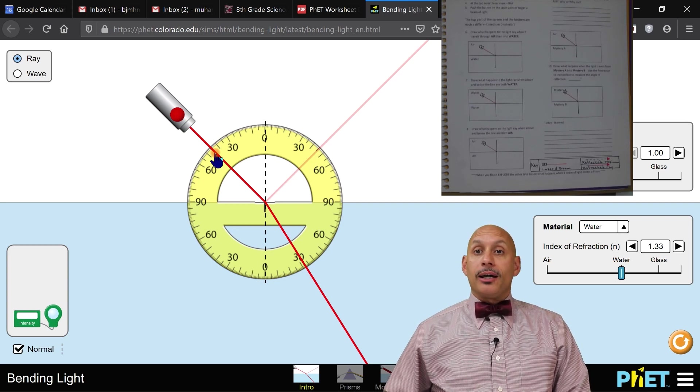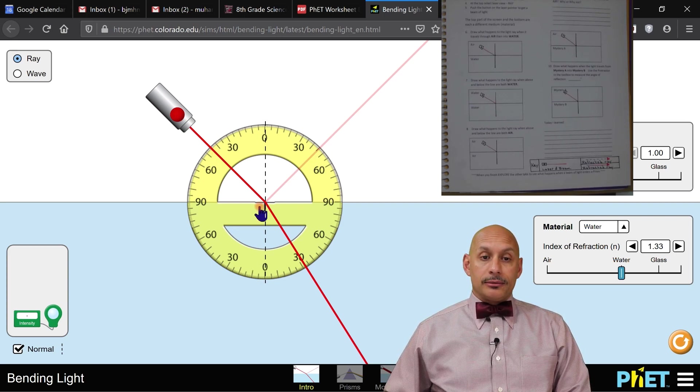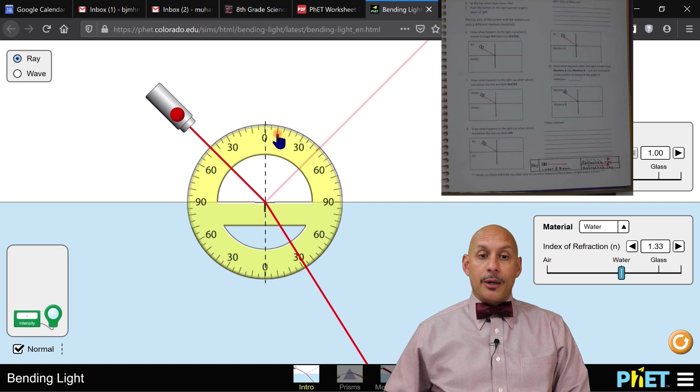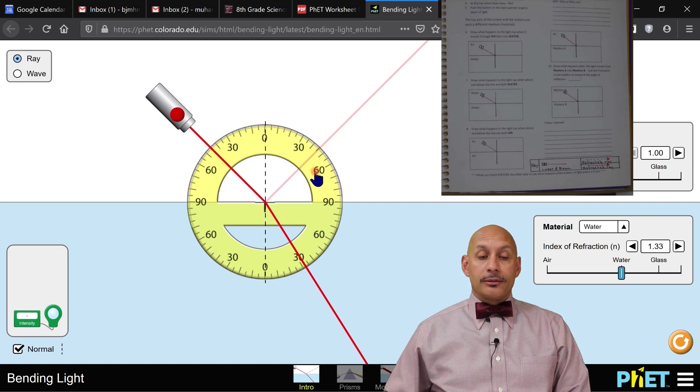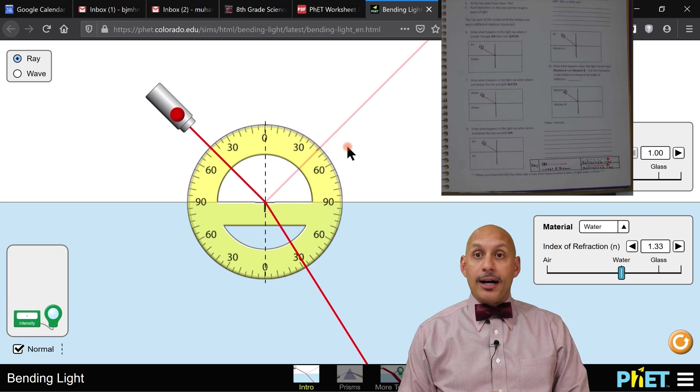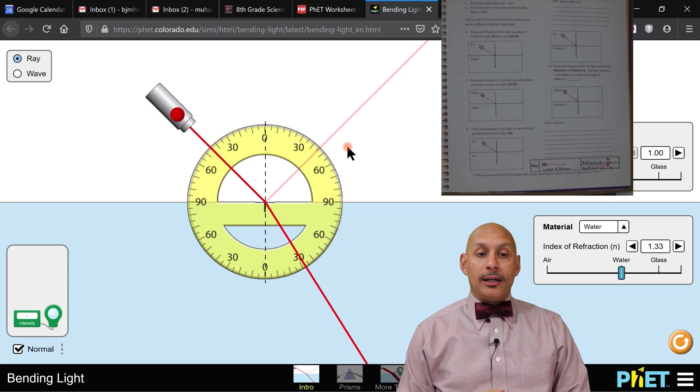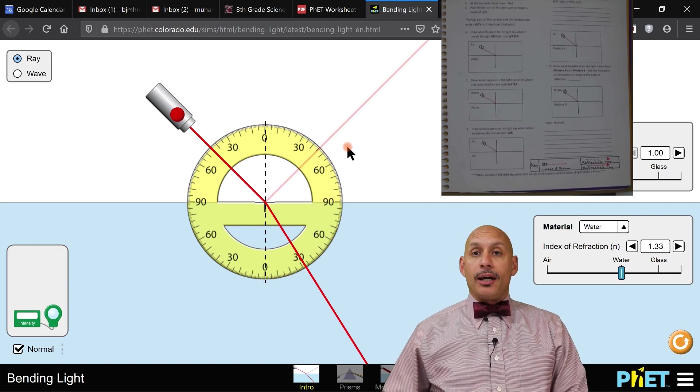Now the reflected ray, what would that be? So this is the reflection. So now we're reading from here and we got 30, 35, 40. It looks like again, 45. Does that make sense? All right.